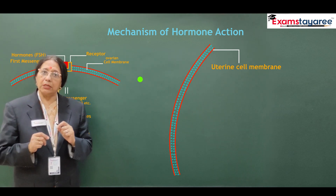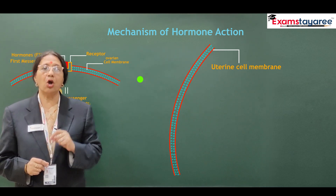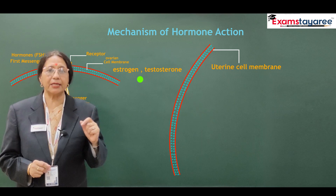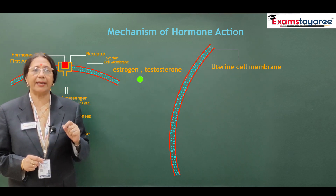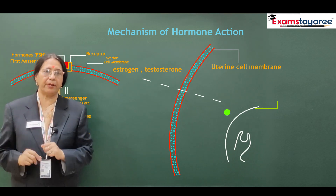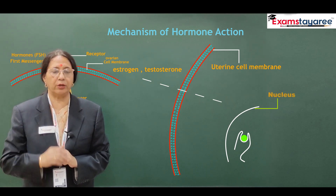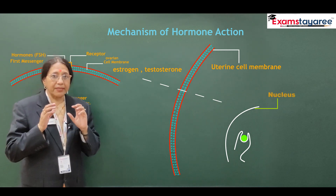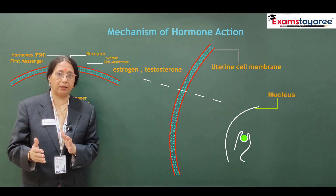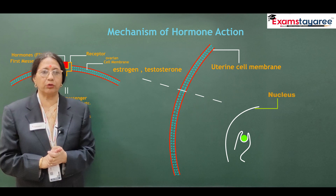Now, suppose the hormone is a fat-soluble or lipophilic hormone — like estrogen, testosterone, etc. Then it can pass through the plasma membrane directly because it is fat soluble. So the receptors are present inside the cell, either in the cytoplasm or in the nucleus.